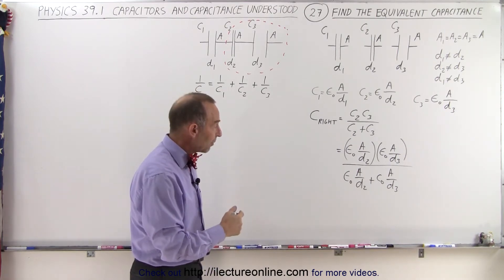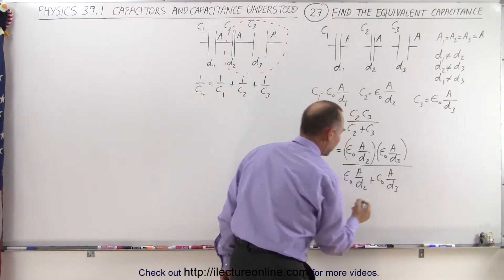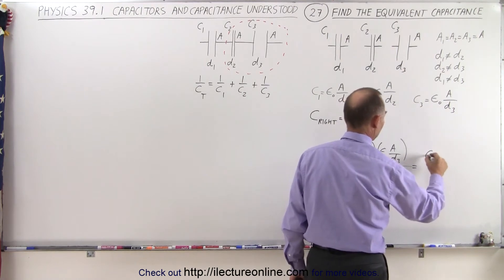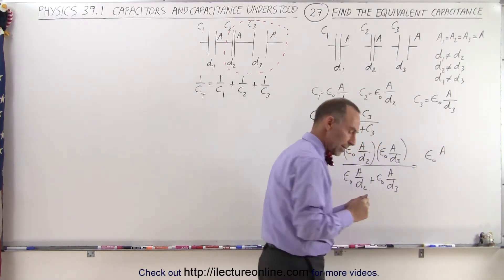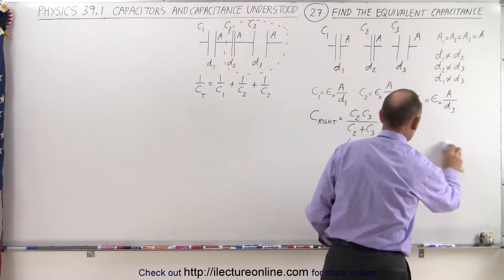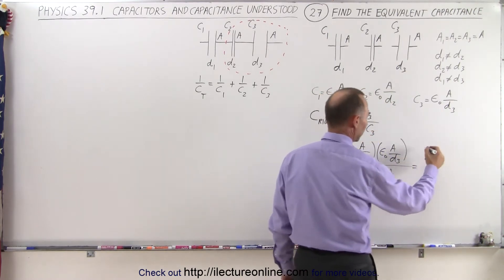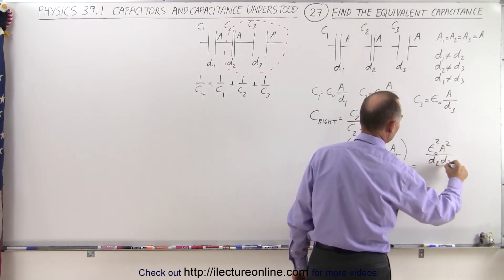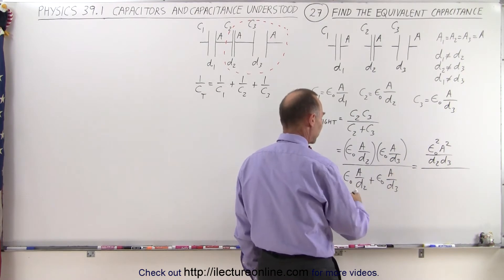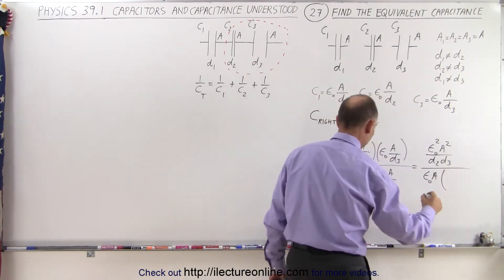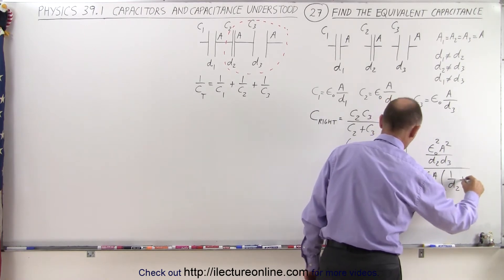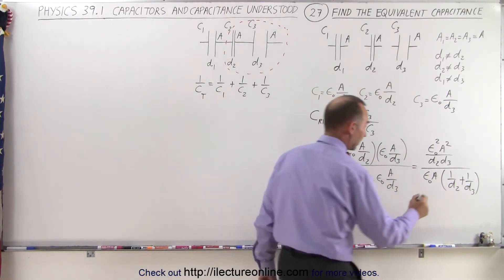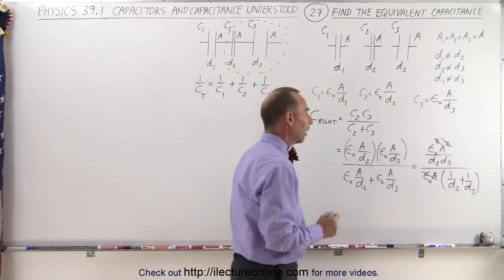Notice that in the denominator I can factor out an epsilon sub-naught times A. So this can then be written with epsilon sub-naught squared A squared divided by D2 times D3 in the numerator. And in the denominator, when we factor out an epsilon sub-naught times A, we have left 1 over D2 plus 1 over D3. Now you can see that I can do some simplification — I can cancel the epsilon sub-naught A with those in the numerator.